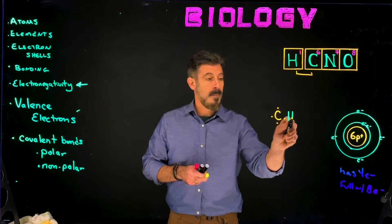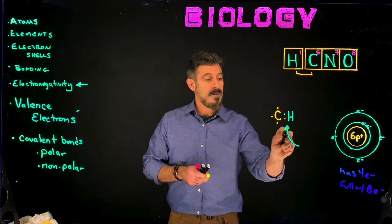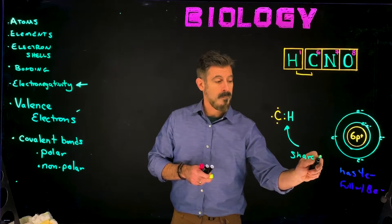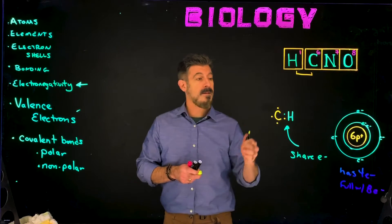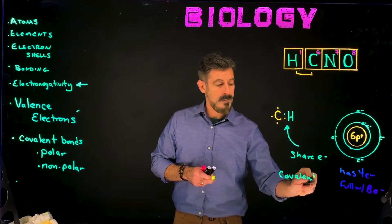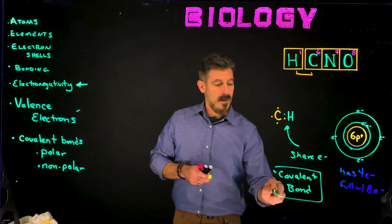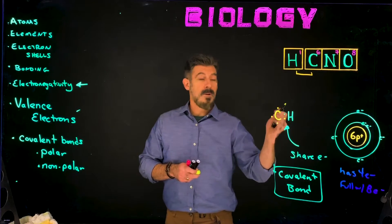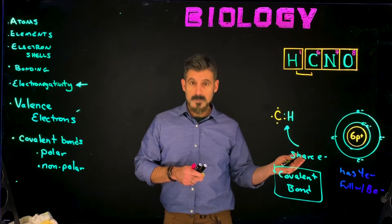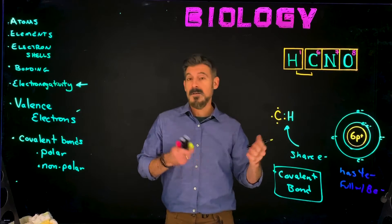If we had, say, a hydrogen — which has a single electron — carbon and hydrogen are going to share electrons, and that's going to be a covalent bond. Covalent bonding is when two elements share electrons to try and fill their outer shell, and they keep sharing until they can fill that shell.